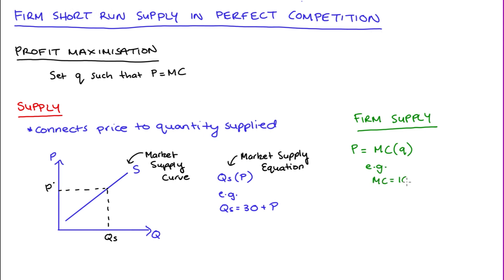Let's say a firm's marginal cost function is equal to 10 plus 2q. Once we profit maximize, we set price equal to marginal cost.